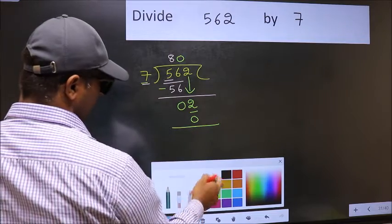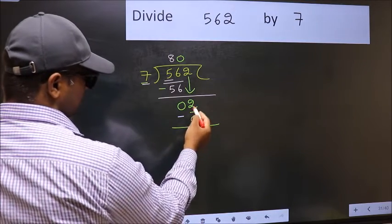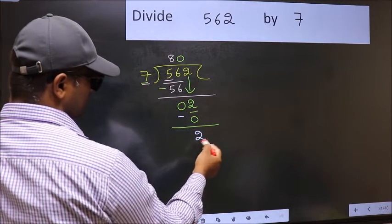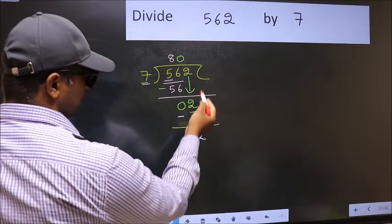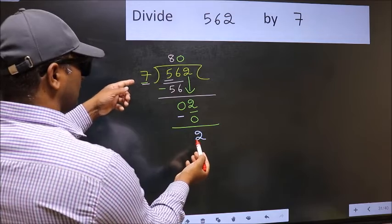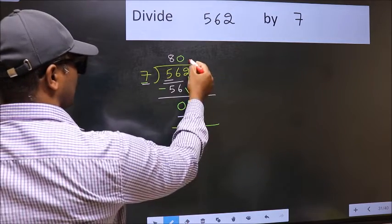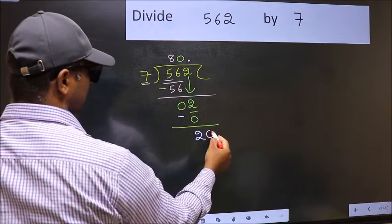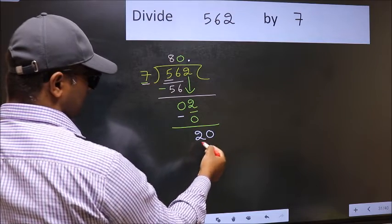Now you should subtract. 2 minus 0, 2. Over here, we did not bring any number down. And 2 is smaller than 7. So now you can put dot and take 0. So 20.